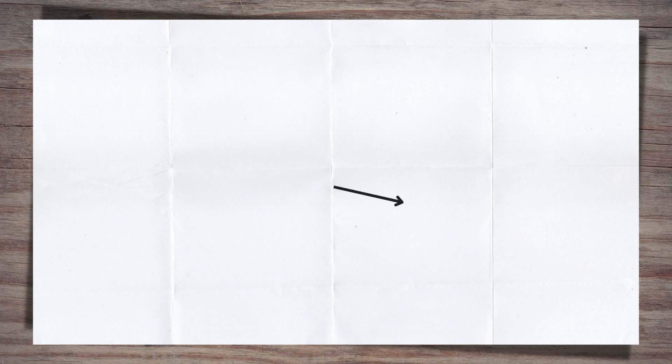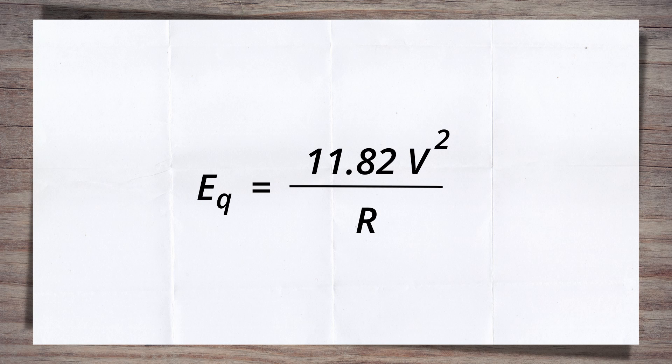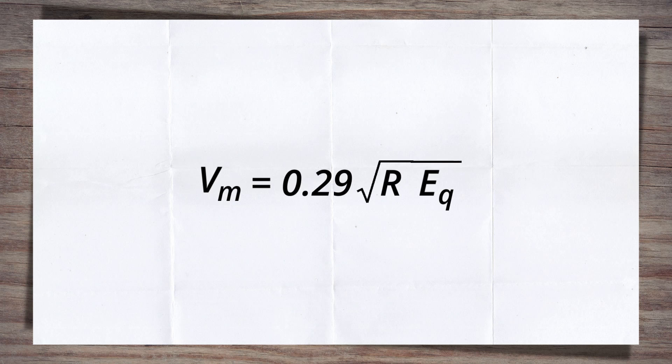The speed on a curve is linked to both the curve radius and the cant through the equation to calculate equilibrium cant. This equation can be rearranged to make speed the variable we're solving for. Let's call this Vmax.